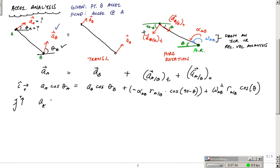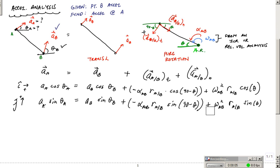And then we would have the J component in the vertical, and we would have A_A sine theta A is equal to A_B sine theta B plus, it would be a minus alpha AB R_AB sine of 90 minus theta plus omega AB squared R_AB sine of theta. And it would be negative also. Very good. Thank you. Let's see, would that work? That does not work. My eraser does not work. So negative right here, and I got to make sure I keep all the brackets consistent.